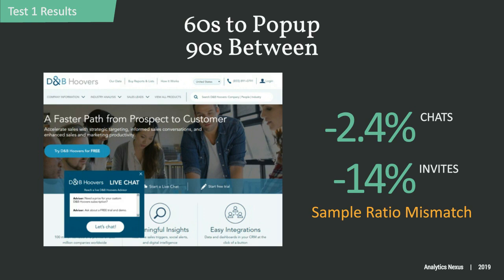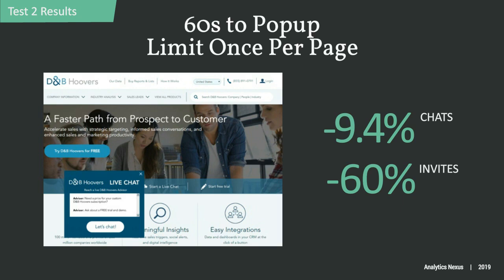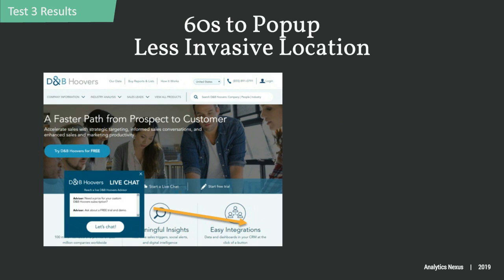In our next test, we tried a slightly different approach — this time limiting pop-ups to once per page view. This actually had a huge decrease in invitation volume, but it also had a much more sizable decrease in chats. So we went back to the drawing board. In the next iteration, we thought maybe it's more about the perception of disruption — so maybe if we moved the chat invitation to the bottom right corner of the screen, it would alleviate some of that frustration. Sadly, this was even worse for chat volume.